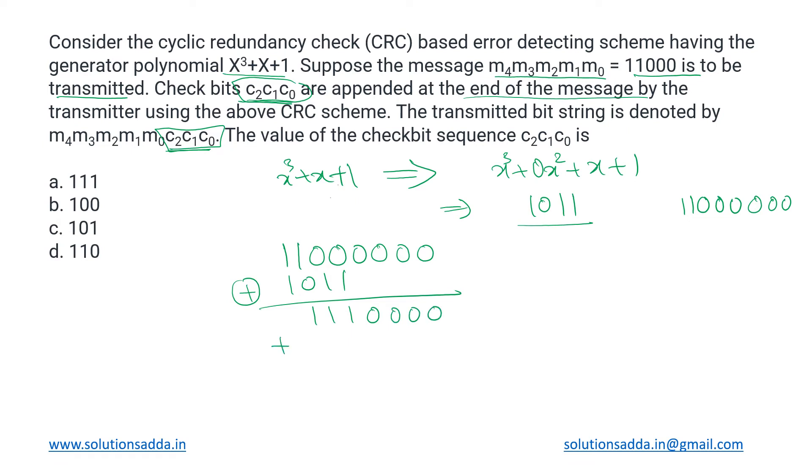And we will once again perform the same procedure with 1011 until we are left with three bits at the end—that will be our generator bits. So again this 11 gives zero, so it is 10100. When we do it one more time, this 11 is zero zero zero, and at the last we are getting 100.